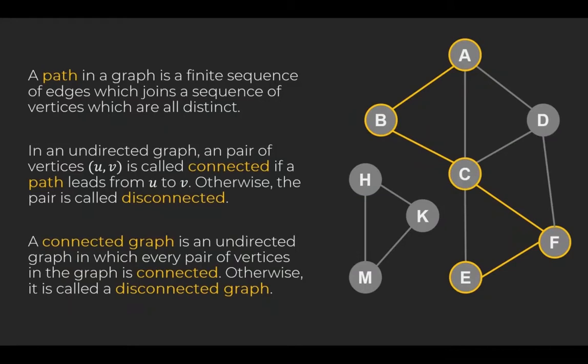The following example is a disconnected graph composed of two components: A, B, C, D, E, F and the second component H, K, M. There is no path between vertices A and vertices K and therefore the pair AK is disconnected.